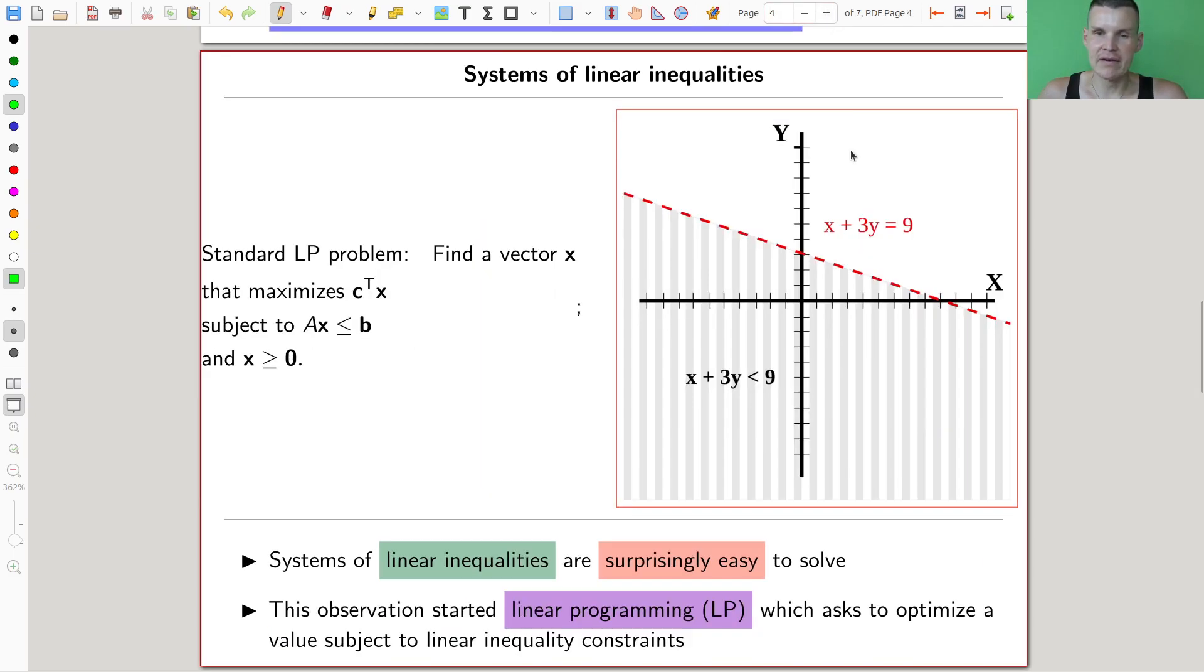So what people have realized, surprisingly late, surprisingly late, is that a standard problem, which is something like, find a vector that does something, standard linear programming problem, is about, not linear equations, but linear inequalities. So you replace the equal sign by a, whatever, a greater or a greater equal, a lower equal, you know, some inequality type thing. And the picture changes a little bit, so instead of having something like a line, you have like a region, usually a polygon type region.